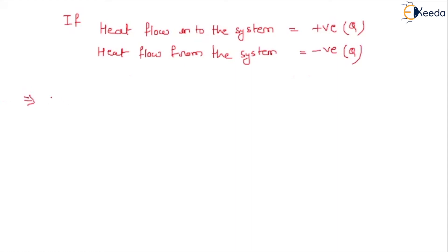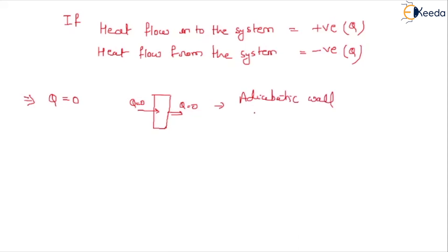When heat transfer is zero, such as through a wall where no heat enters or leaves, that wall is called an adiabatic wall. If heat transfer is occurring from the wall to the surrounding or from the surrounding to the wall, that wall is called a diathermic wall. This is the key difference between an adiabatic wall and a diathermic wall.